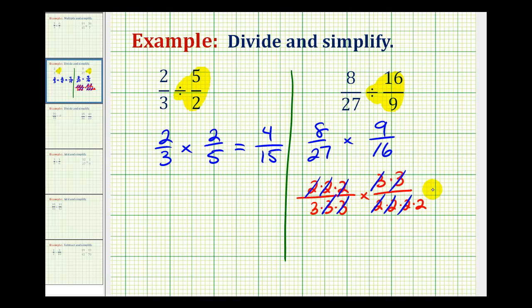Now when we multiply, this will already be in simplest form. In the numerator, all of these simplify to one. So we have a numerator of one. The denominator is going to be three times two, which is six. So eight-twenty-sevenths divided by sixteen-ninths is equal to one-sixth.